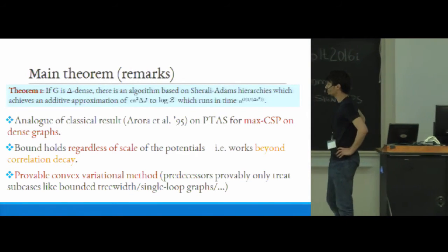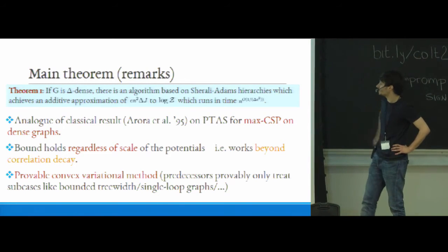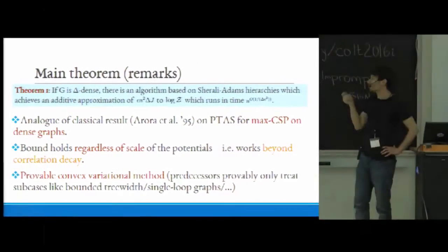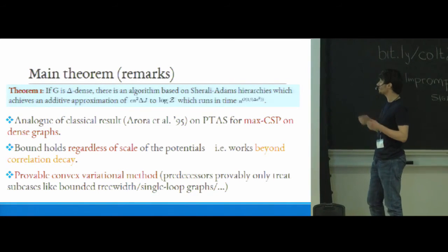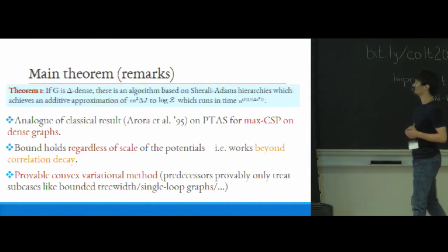So let me make a few remarks on the statement of the result, and then I'll sort of tell you how you might get such a result. So you should think of this really as a direct analog of a classical result due to Arora et al. from the 90s on getting PTASes for essentially maximum constraint satisfaction problems on dense instances. Very importantly, this result will hold regardless of the scale of the potential, so basically regardless of the size of J. I mean, certainly the guarantee is worse if J is larger, but still the result is true nevertheless. And it works in particular beyond this regime which is called correlation decay. So correlation decay essentially occurs when, loosely speaking, when the potentials are low enough that sort of nodes which are far away in the graph don't really depend on each other. And this is typically the regime where many of the provable algorithms actually give you something.